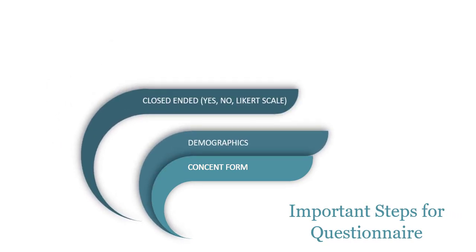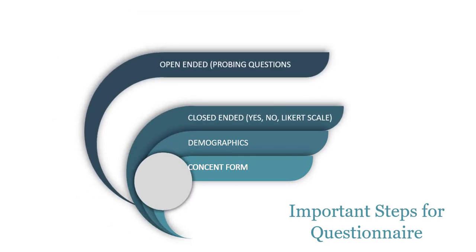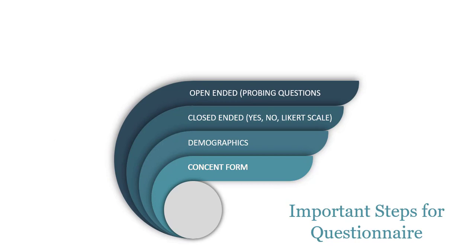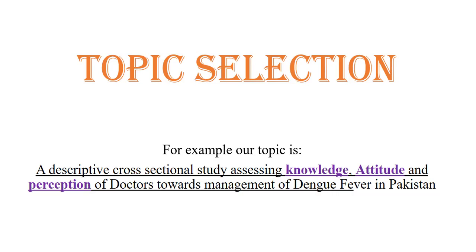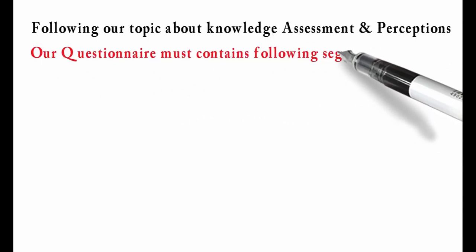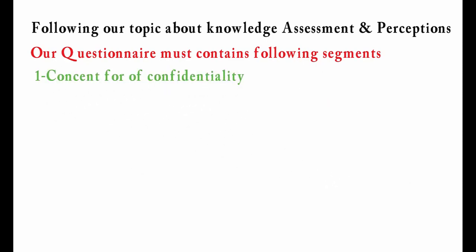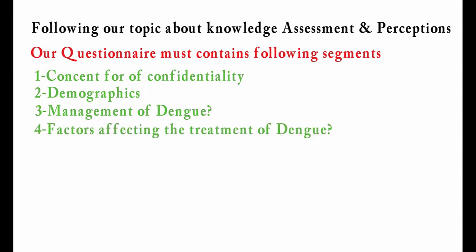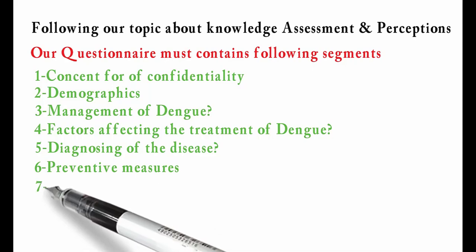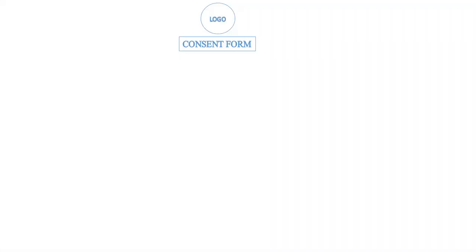Before jumping towards questionnaire formulation, there are a few important steps to consider. First, we make the consent form, then we collect demographic data, and then there will be open and closed-ended questions. As an example, I have selected a descriptive cross-sectional study assessing the knowledge, attitude, and perception of doctors toward the management of dengue fever in Pakistan. Our questionnaire must contain the following sections: consent form of confidentiality, demographic data, management of dengue, factors affecting treatment, diagnosing the disease, preventive measures, and finally treatment.